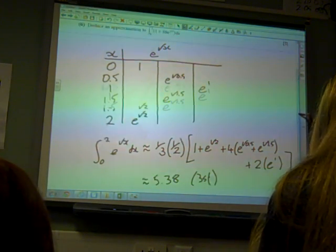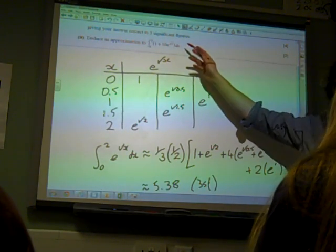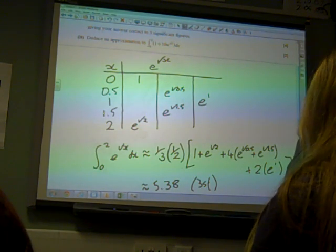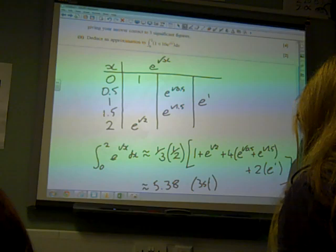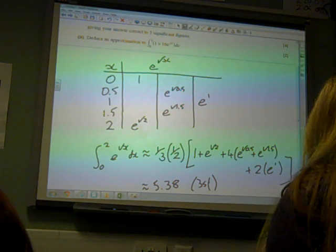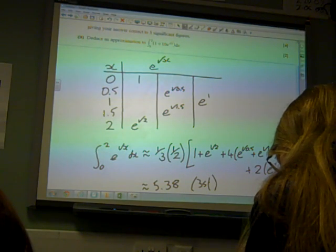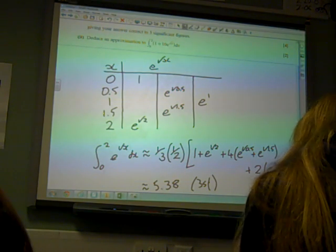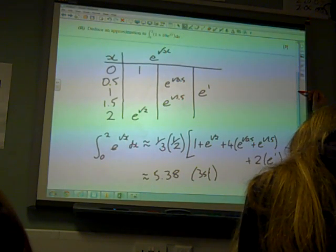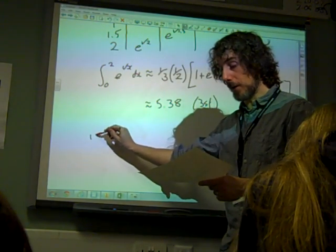Now part 2 said deduce an approximation to that. Now one person did Simpson's rule all over again and got the correct answer. And that was a kind of special case for doing this. It did get both of the marks for doing that, but it's not what the question wanted. To deduce that, well, let's think about what this means. We know that we can split up integrals. You didn't have to show this amount of working out.